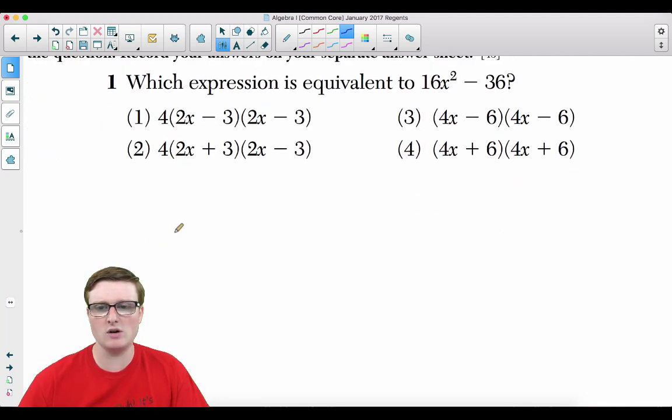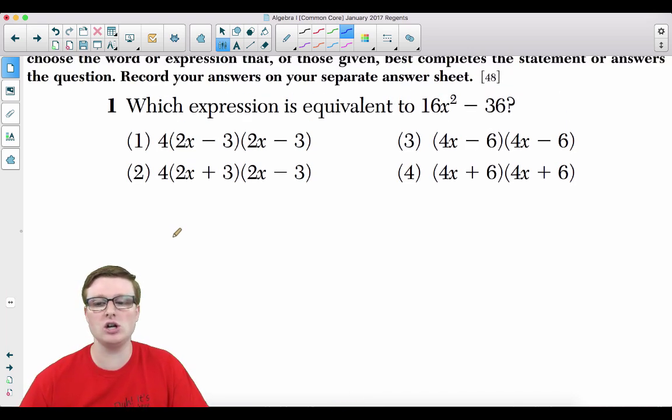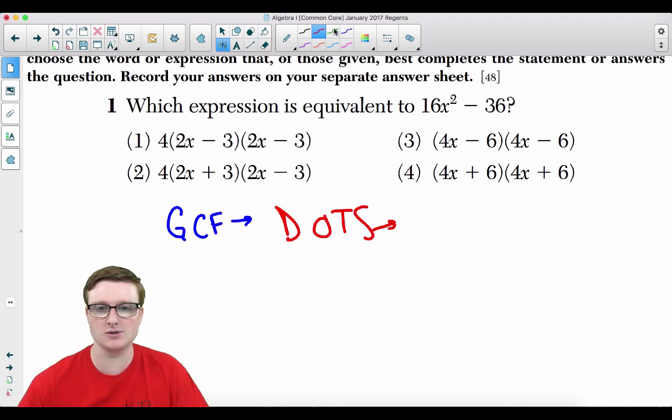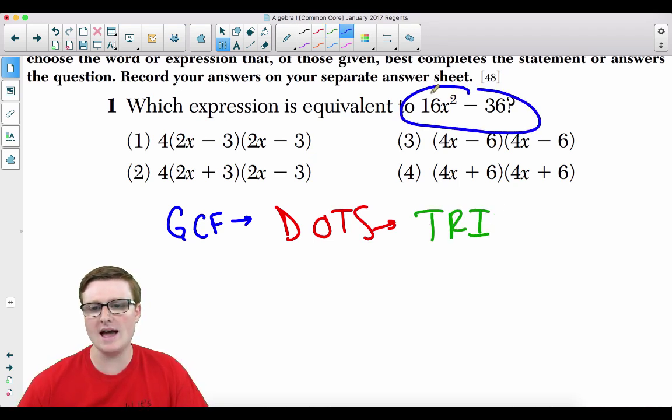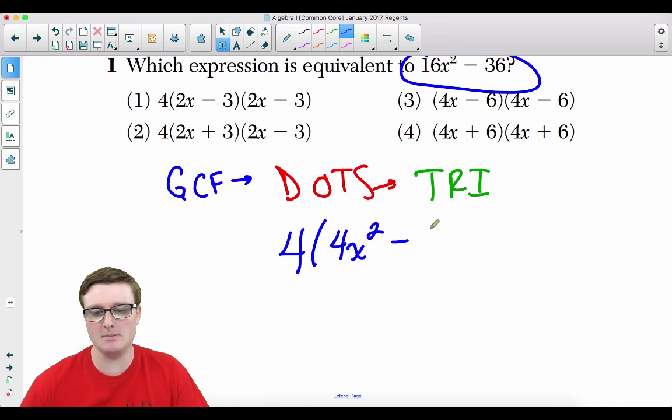Number one, which expression is equivalent to 16x squared minus 36. By now you should understand that the order of factoring is GCF followed by the difference of two perfect squares followed by the trinomial method. So when we're looking at this, we have to determine, is there a greatest common factor? And yeah, there is. The number 4 can go into 16 and 36.